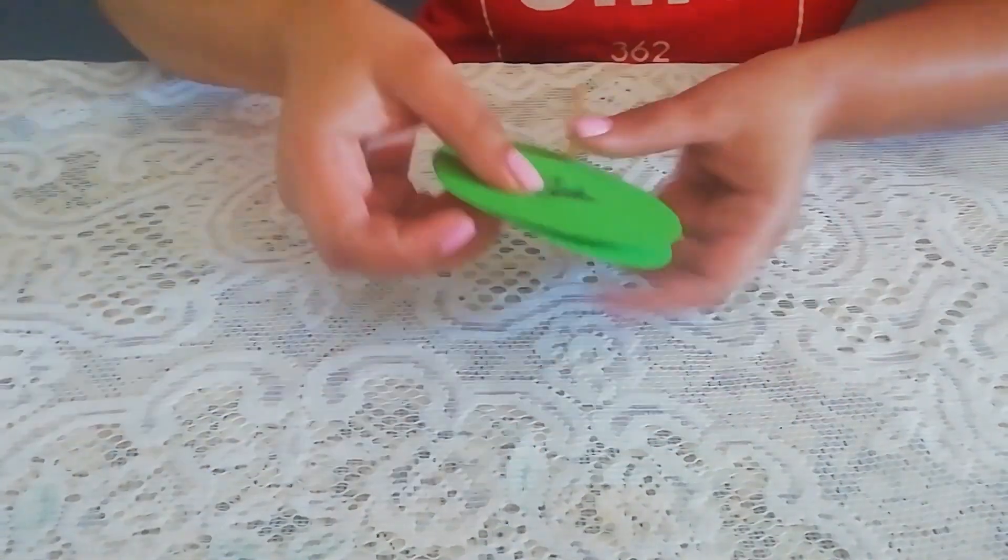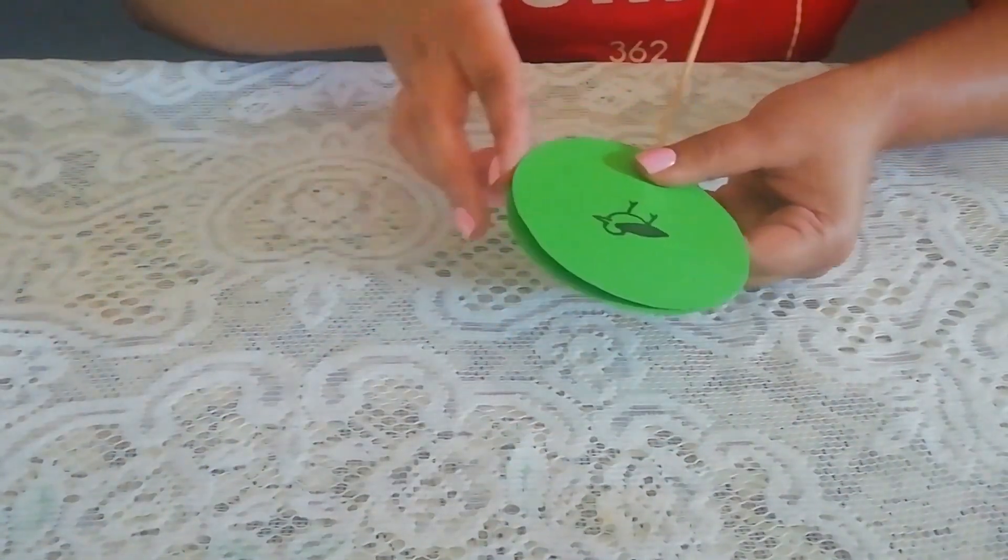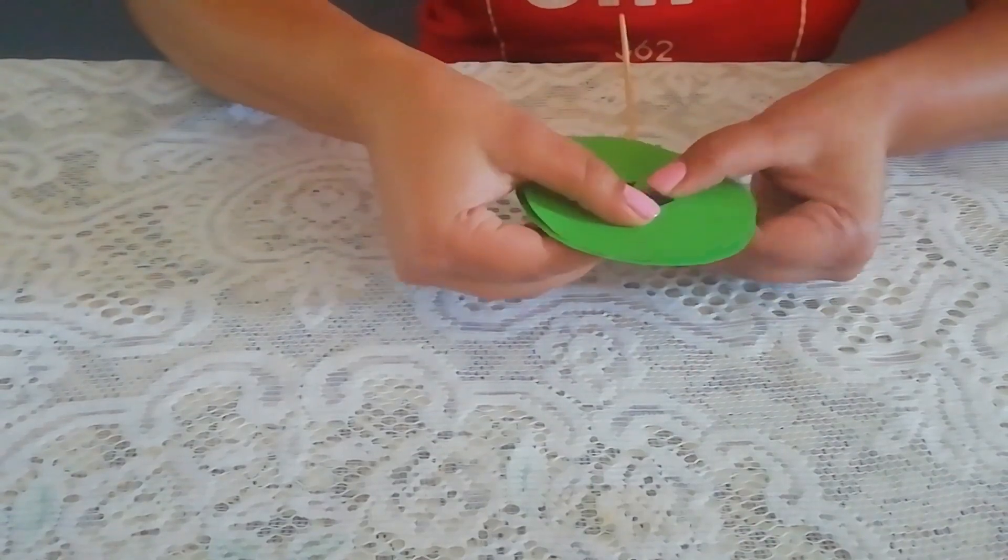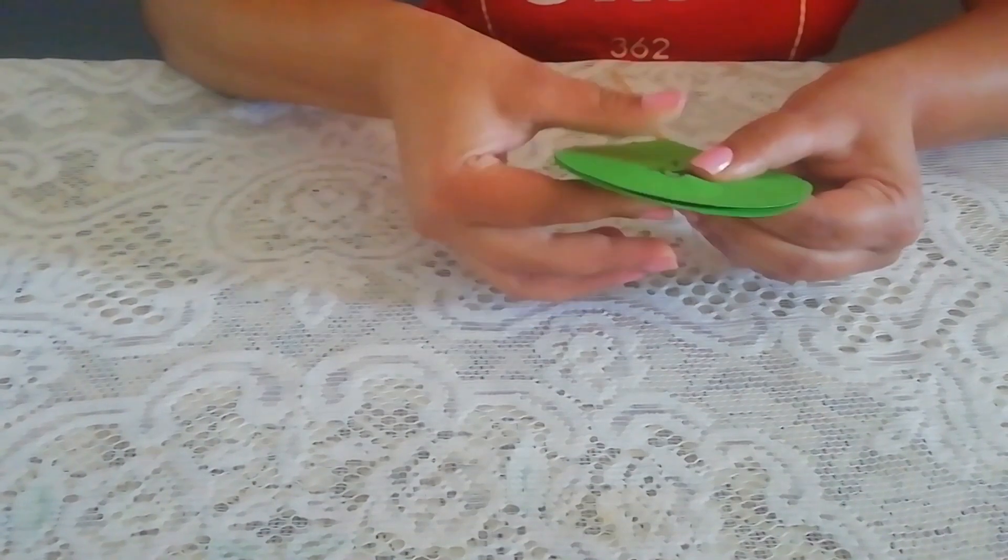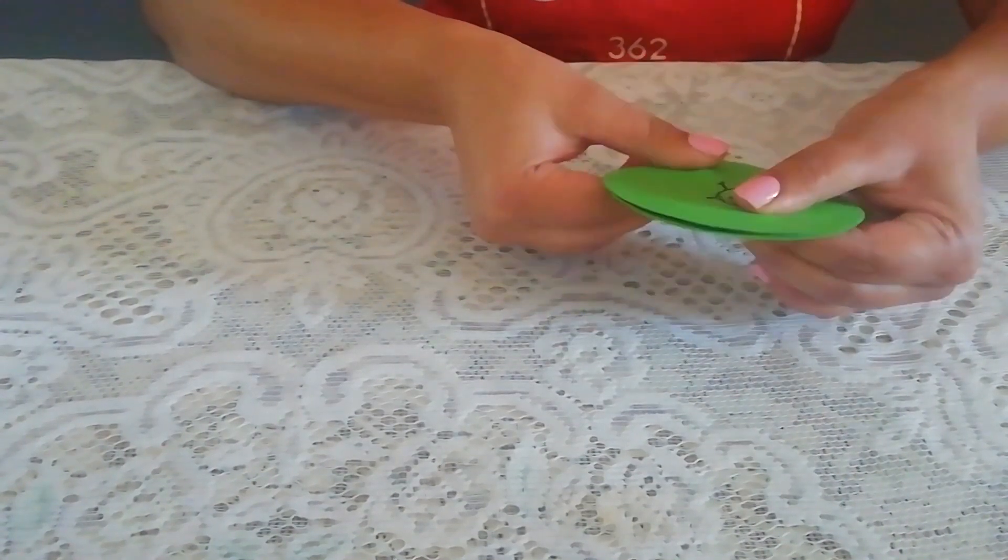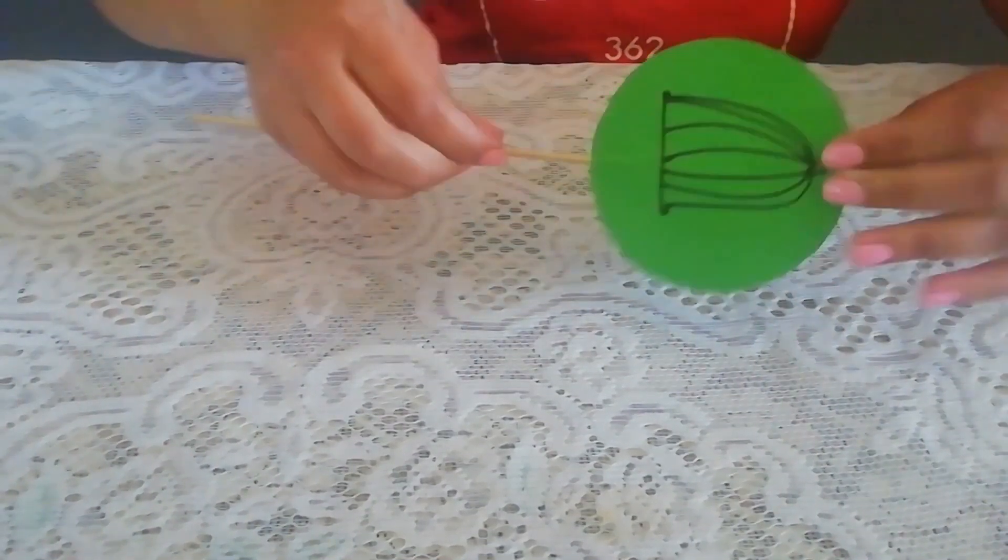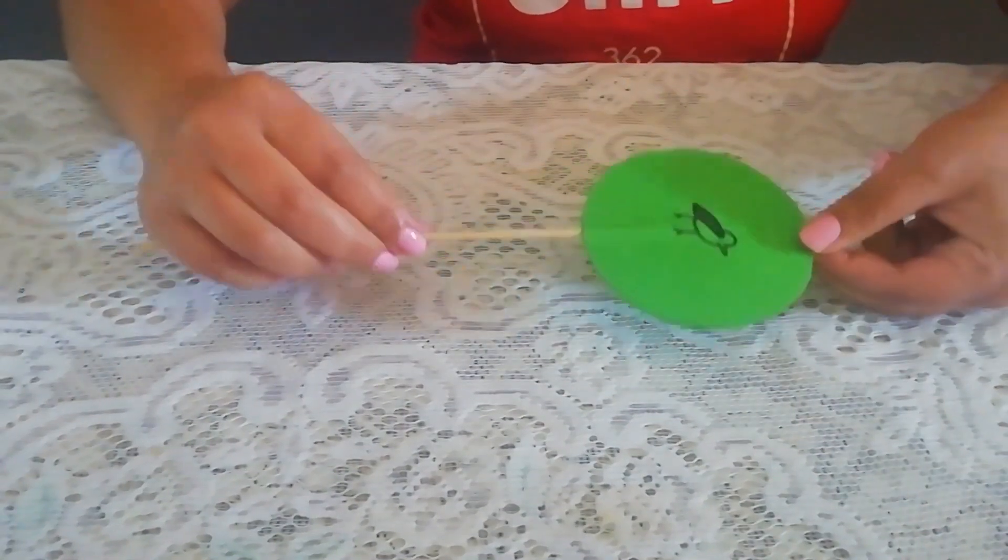When you are ready, turn over the circles so that they are still aligned right side up, but now lie face down. Adhere the two circles back to back with the skewer stick sandwiched between them. Make sure you align the circles correctly.